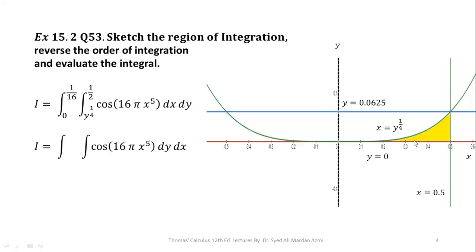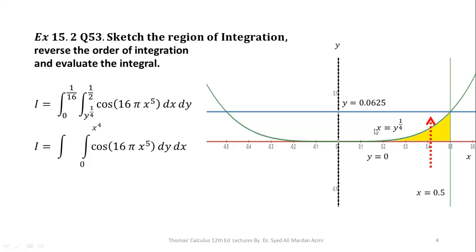We need new limits for these inner and outer variables, and these limits will be obtained through the region. As y is our inner variable, in order to calculate the limits of inner variable y, we will pass a vertical arrow through this region. This arrow enters the boundary y = 0 and exits through the power function boundary. So from here we get the limits of y. The lower limit of y will be 0, and from the upper boundary, taking the power 4 on both sides, we get y = x^4, which gives the upper limit.